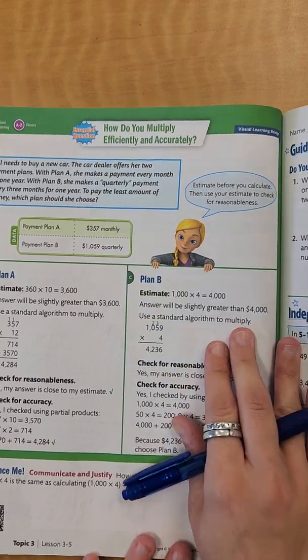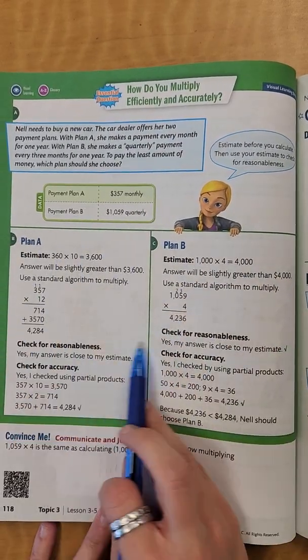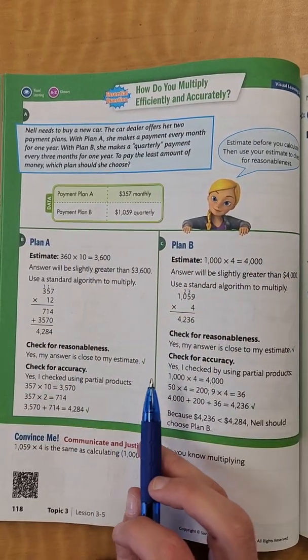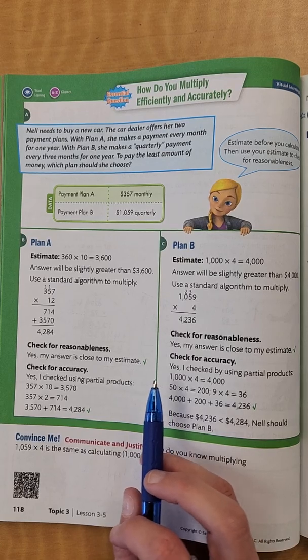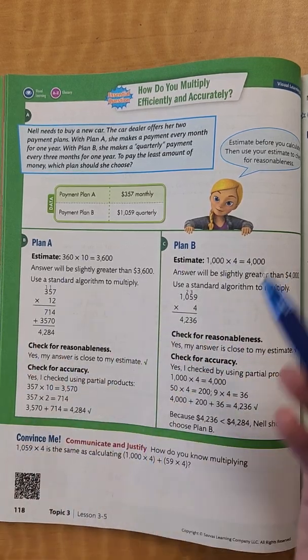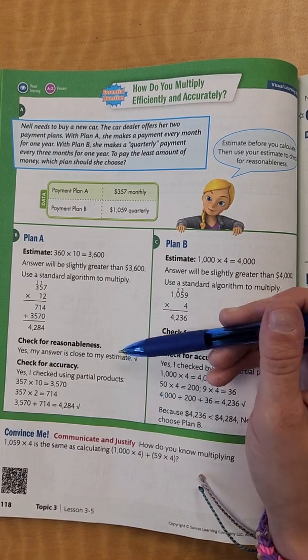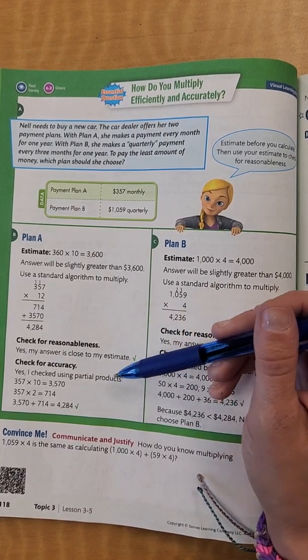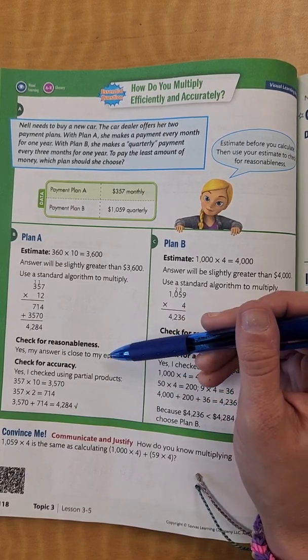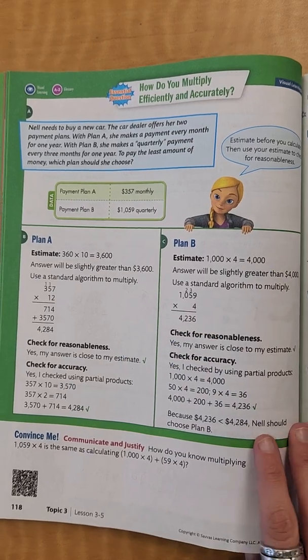Let's look at the next page. Again, this is showing us different ways you can multiply efficiently and accurately. We're not going to go through these because it's just giving us these answers and showing you how you can check to see if it's close to your estimate or not.